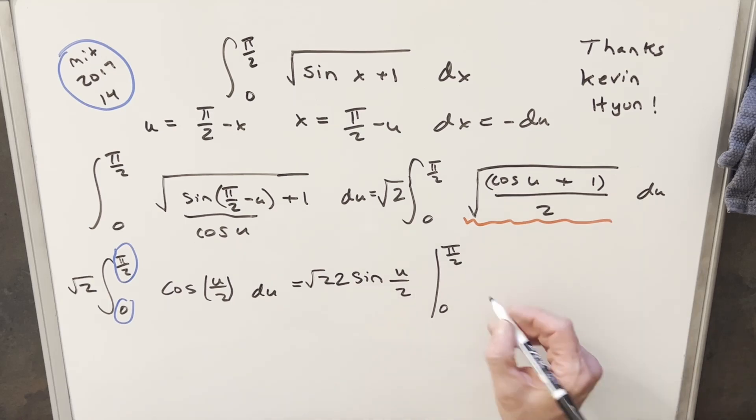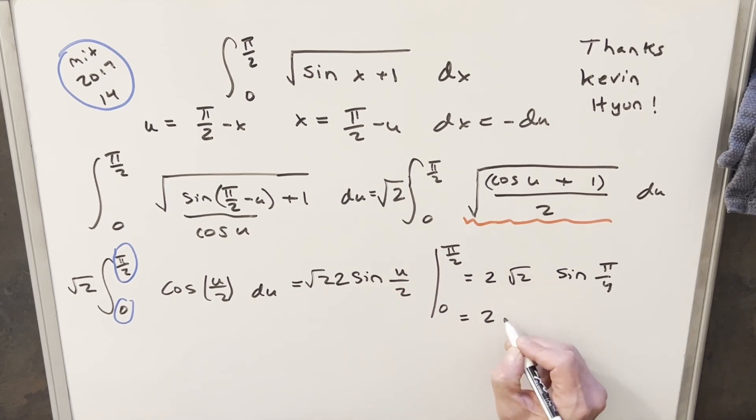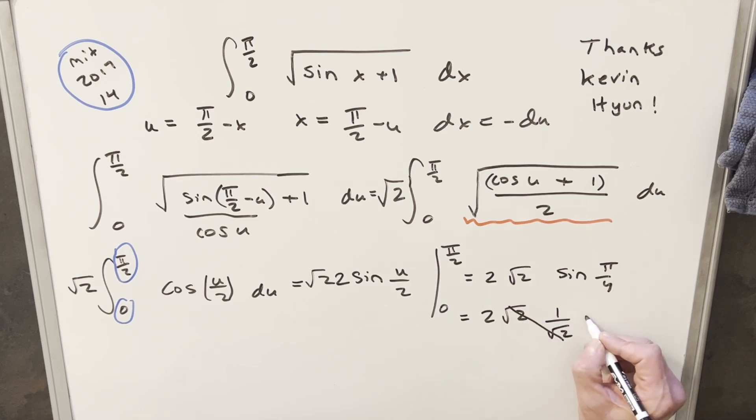We just need to evaluate this from 0 to pi over 2. Now at 0, sine of 0 is going to 0, so we won't worry about that. We're going to have our 2 square root of 2 here. Then plugging in pi over 2, this is going to be sine of pi over 4. Well, sine of pi over 4, that's just going to be the same thing as square root of 2 over 2, or I can actually write it as 1 over square root of 2. But then the square root of 2s cancel. We're just left with our final solution, just 2.